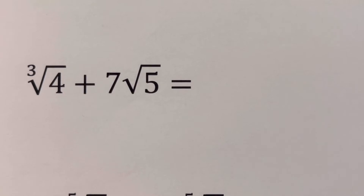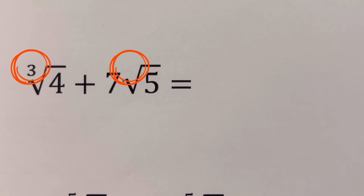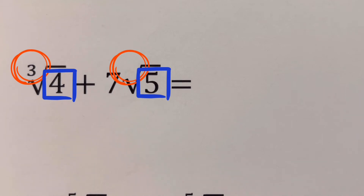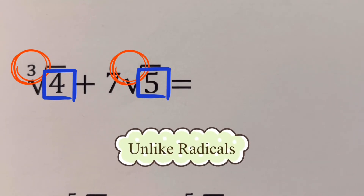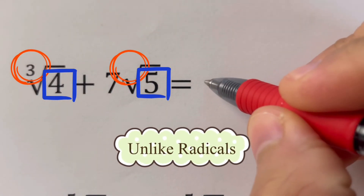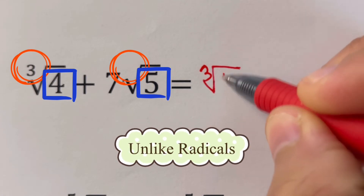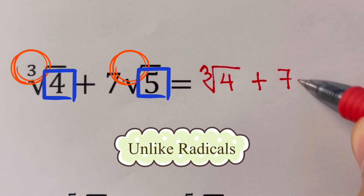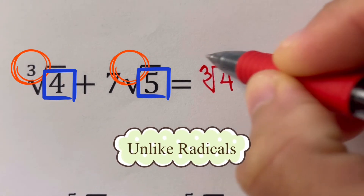Going back to the problem, we need to add these two radical expressions. The first index is 3 and the other is 2, and the radicands are 4 and 5 respectively. Since they don't have the same indices or radicands, they are unlike radicals, so we keep the expression as the final answer: the cube root of 4 plus 7 times the square root of 5.